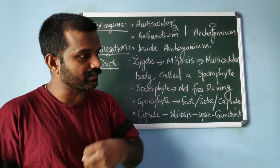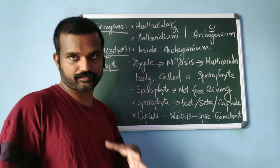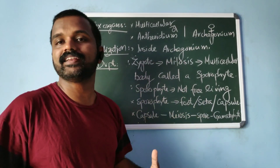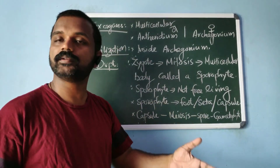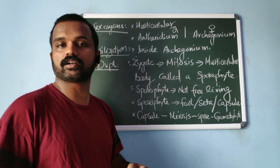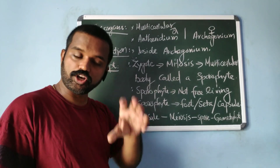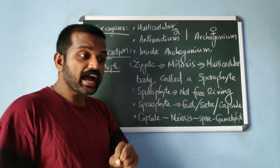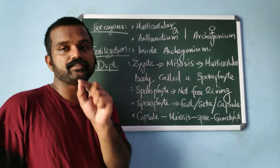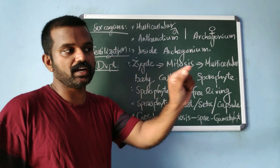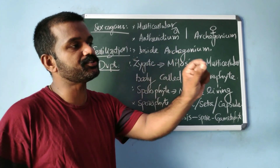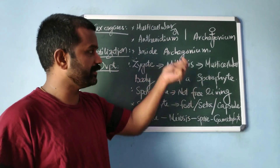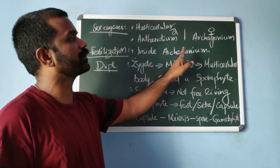The male gametes, that is antherozoids, are released into water, but this doesn't mean they require a water body — moisture content is enough. These flagellated male gametes move towards the archegonium and enter it.